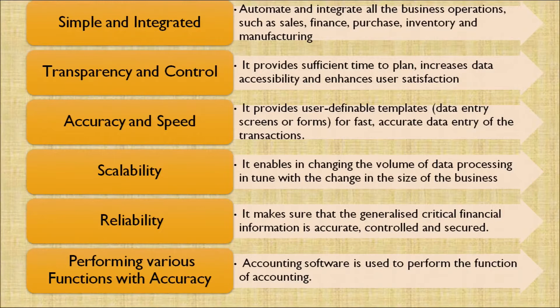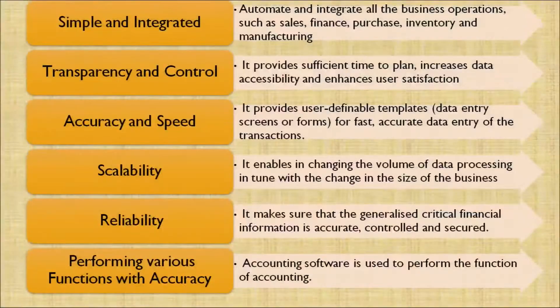Number one, simple and integrated: the computer can help us pass accounting entries with simplicity, can be used through storage devices, and is integrated. While passing an accounting entry in a computer-aided system, we can use these entries in the future as well and recheck whether any errors have occurred. Number two, transparency and control: it provides sufficient time to plan, increases data accessibility, and enhances user satisfaction. Third, accuracy and speed: it provides user-definable templates, data entry schemes, or forms for fast and accurate data entry of transactions.